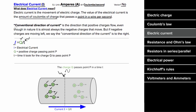The so-called conventional direction of current is the direction that positive charges would flow within a wire. However, positive charges don't actually flow in a wire — the only charges that actually flow are negative charges. But negative charges flowing to the left is physically the same as positive charges flowing to the right. So in most physics problems we pretend as if positive charges are moving, even though it's really the electrons — which are negative — that are moving within the wire.